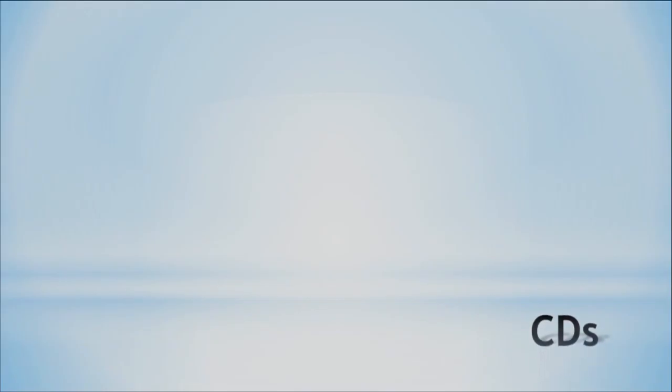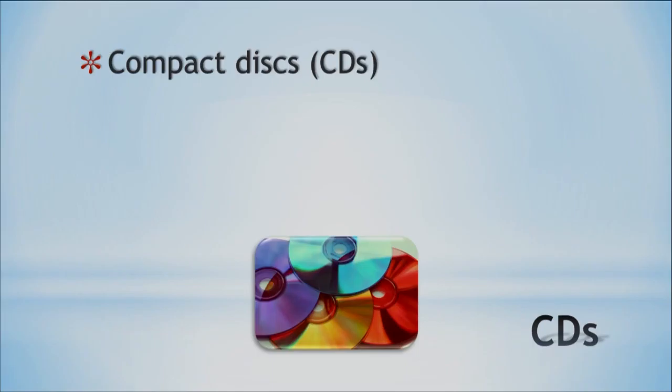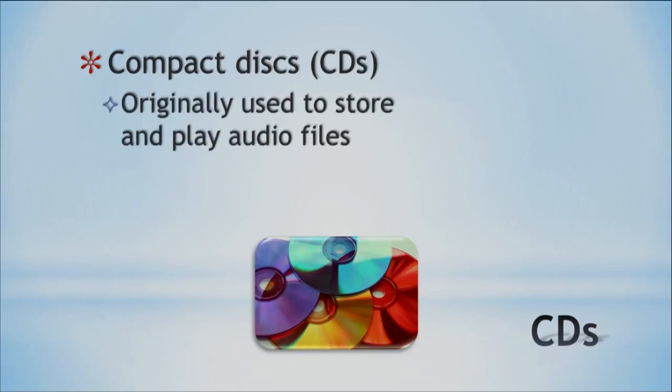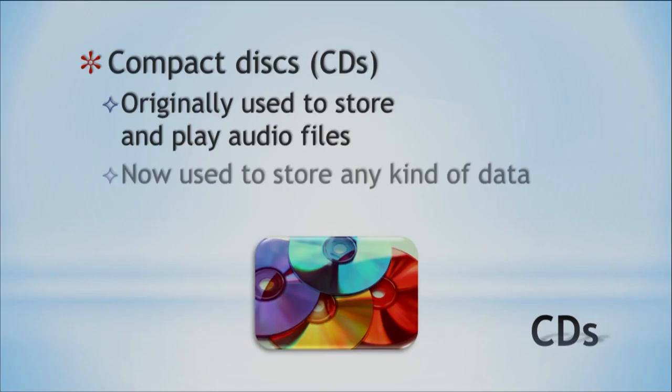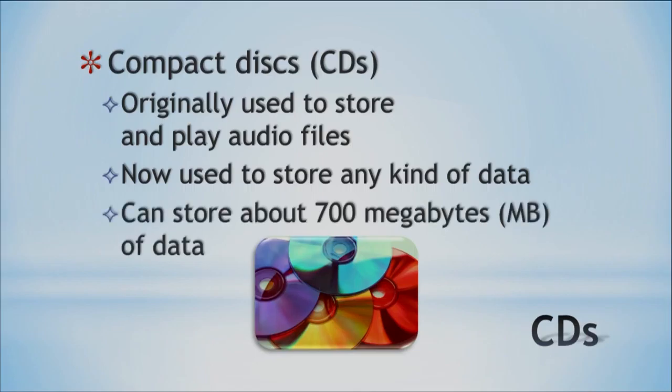For CDs — compact disks — originally these were used to store and play audio files, basically music. Back in the 90s, seeing the first CD in the dormitory was impressive. Now it's not just for music though; it's any kind of data. We can store about 700 megabytes of data. You can put an album on there and it sounds real crisp compared to older records or tapes. Now any kind of data can be stored on a CD.